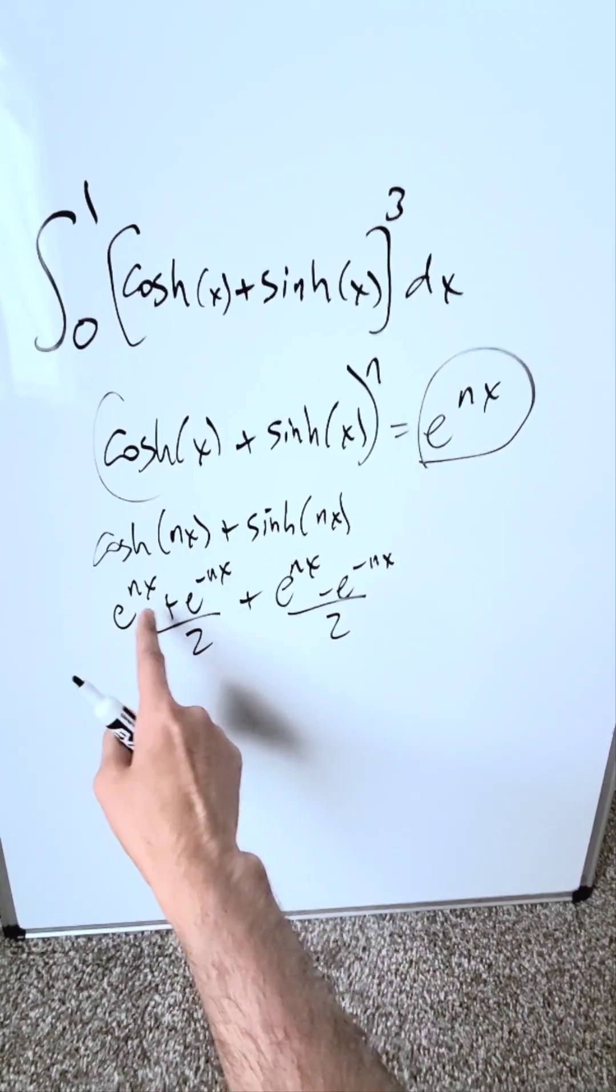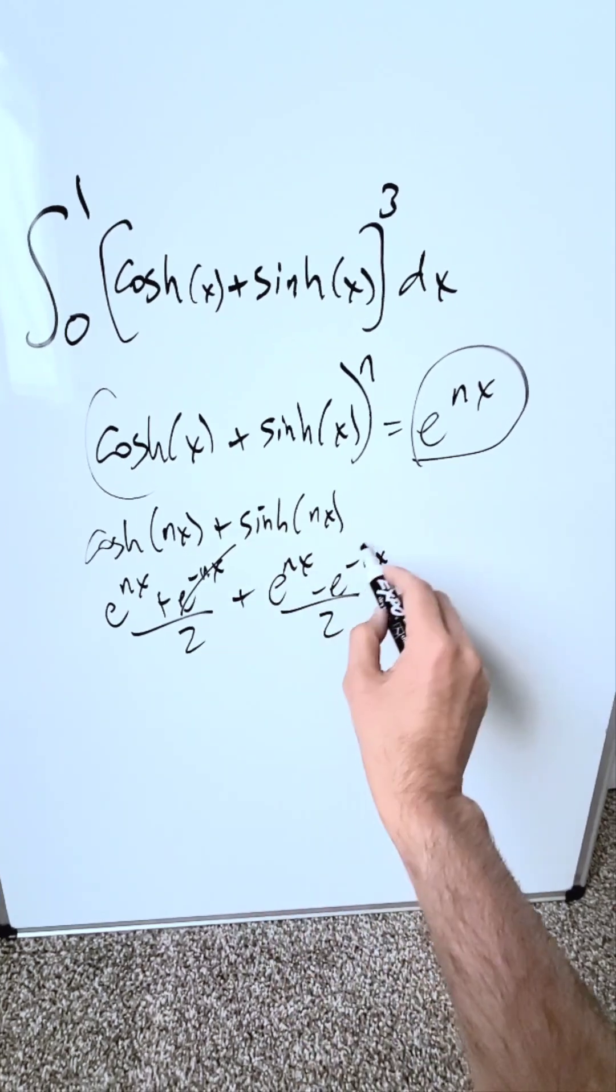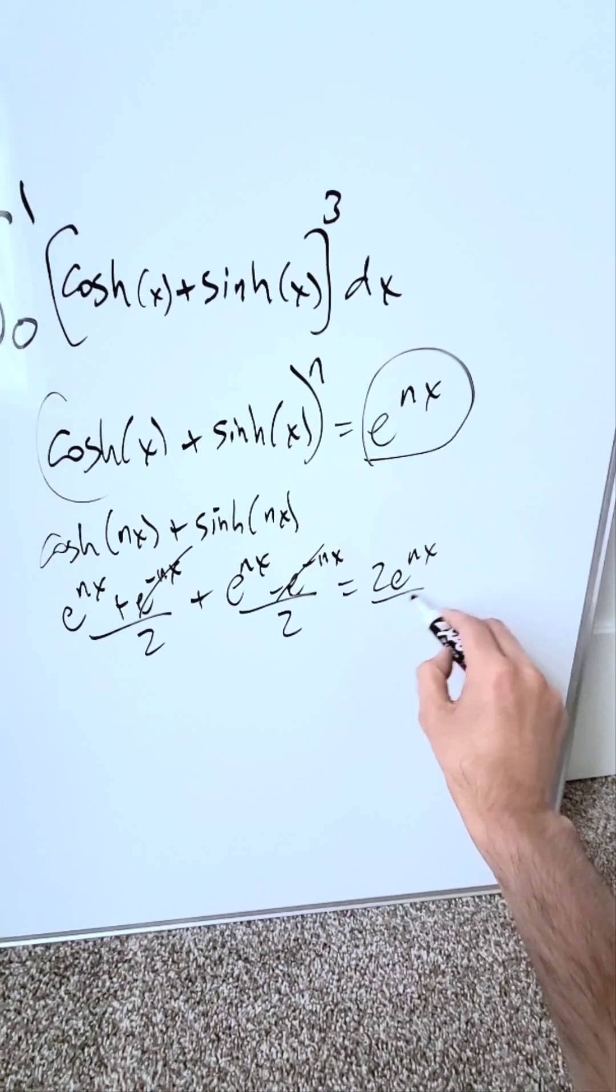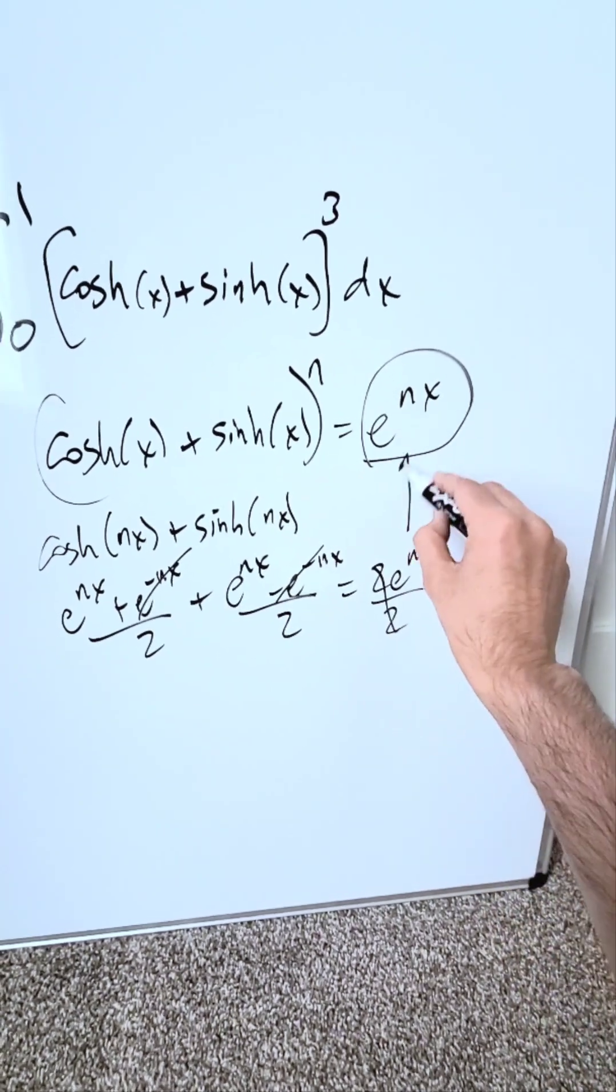You have a common denominator. Just add everything across. These two items would cancel out. But then you have two similar items which would double: 2e to the power of nx divided by your denominator 2. These cancel out and you end up with that.